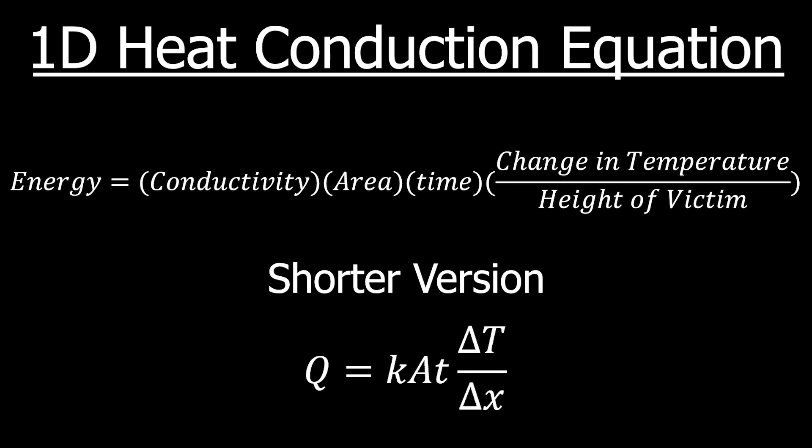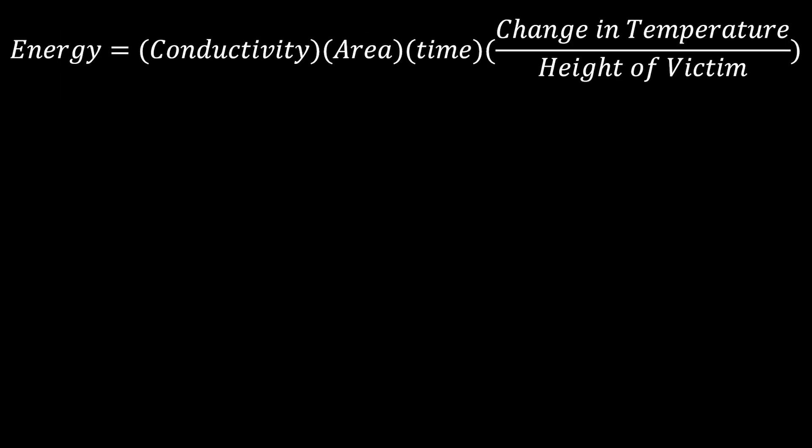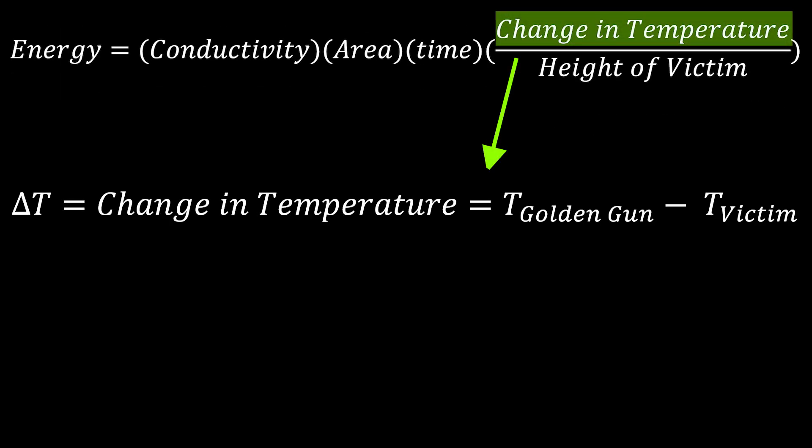Don't worry if you don't understand all the variables I've written here. I'll explain them in just a second. First, the change in temperature is the hot temperature of the golden gun shot minus the cold temperature of the victim. So, we can replace this in our equation.